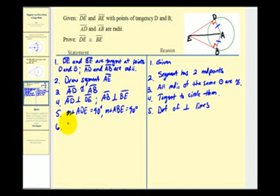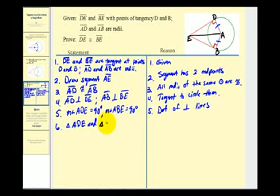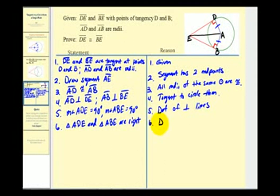Therefore, triangle ADE and triangle ABE are right triangles, by the definition of right triangles.